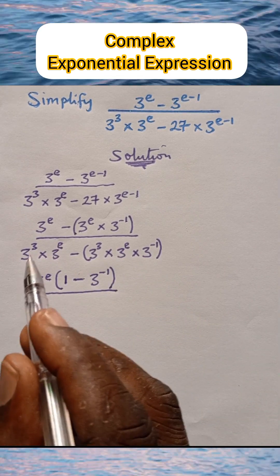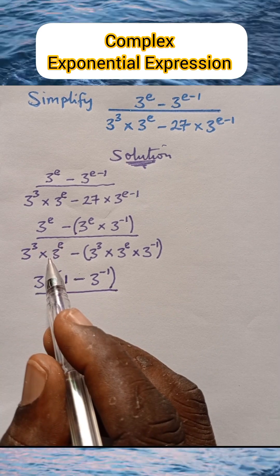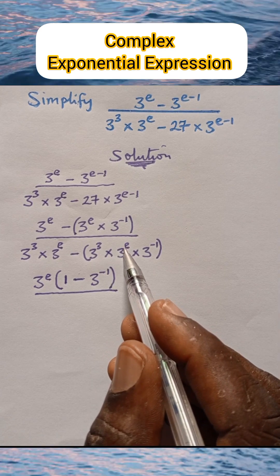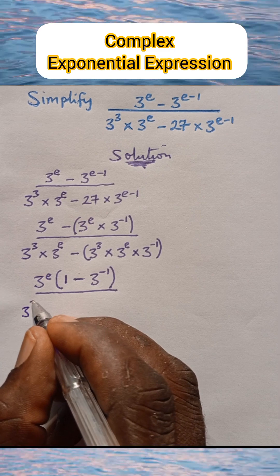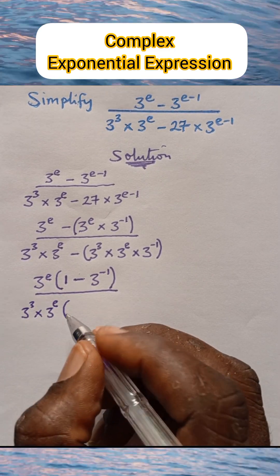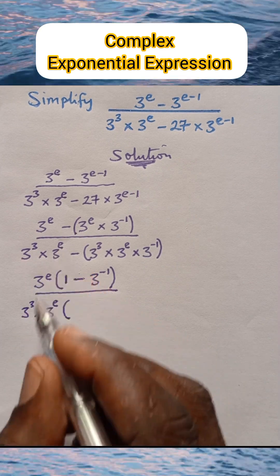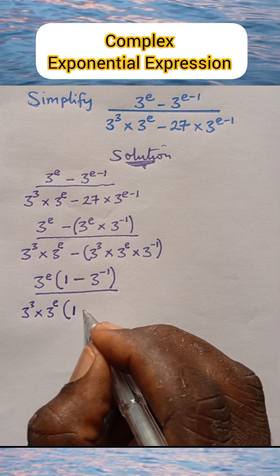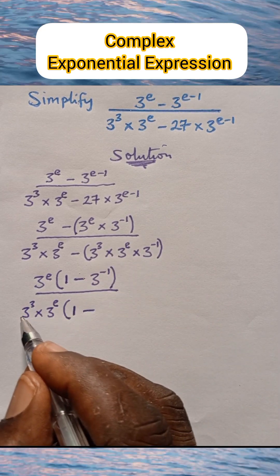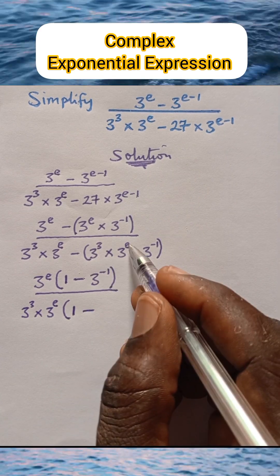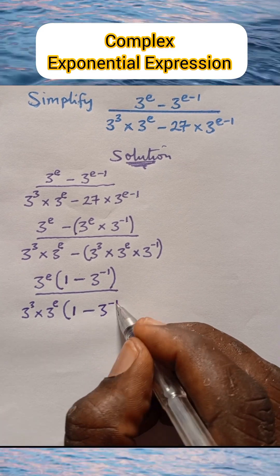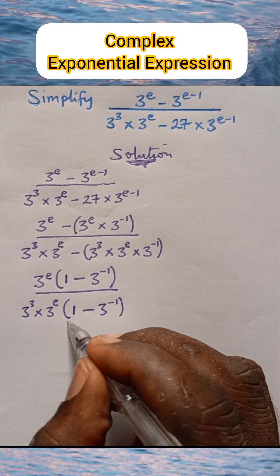Similarly in the denominator, something is common to both sides: 3 raised to power 3 multiplied by 3 raised to power e is present on both sides. So we factor out 3 raised to power 3 multiplied by 3 raised to power e, then open a bracket. This divided by this is 1, minus this expression divided by what we have here — this cancels, leaving 3 raised to power negative 1.